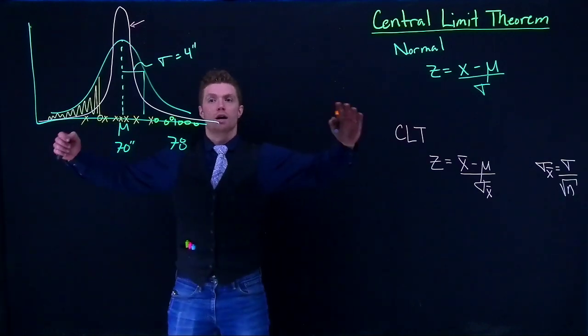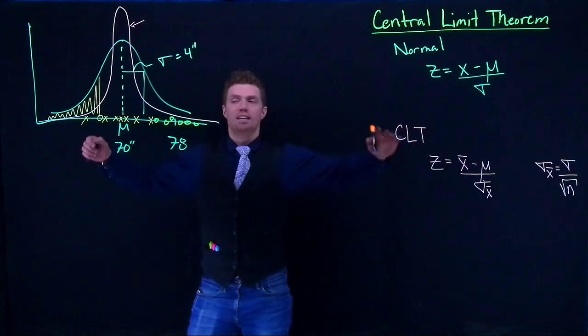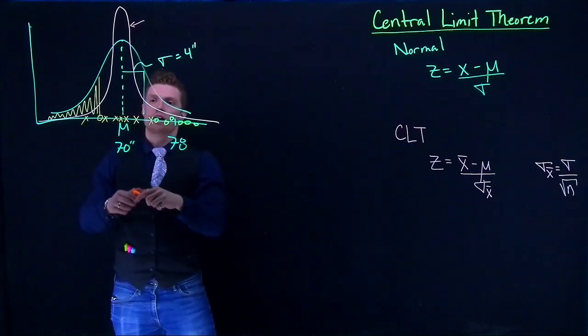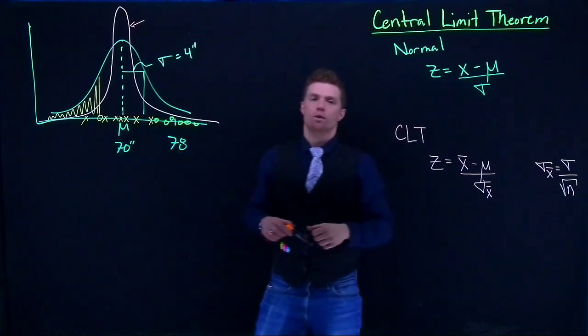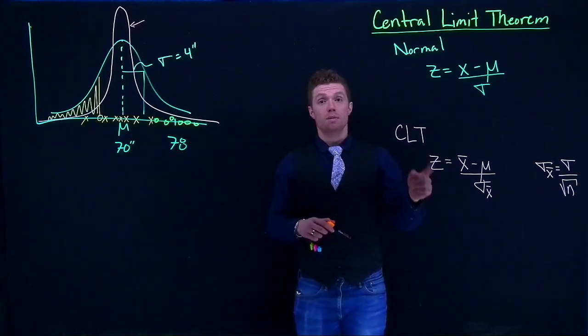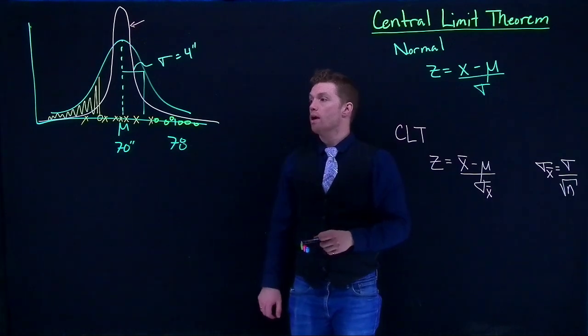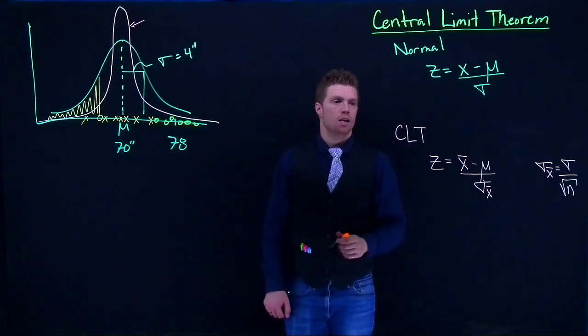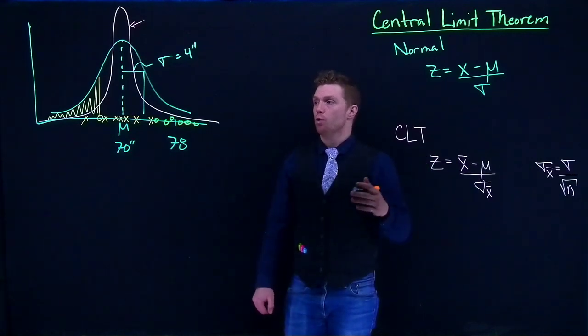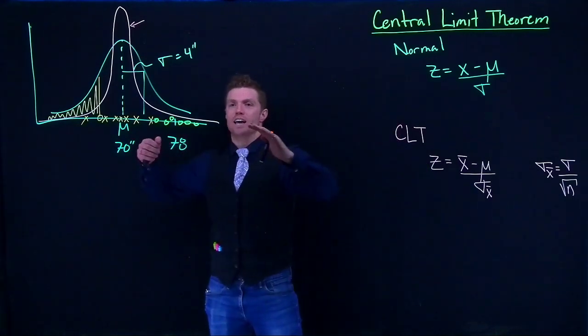And so that's why, when we're talking about the sampling mean, it gets narrower, because as our sample size increases, it gets harder and harder for that sample mean to deviate significantly away from this true population mean. So that's how the central limit theorem works, how it gets tightened down.